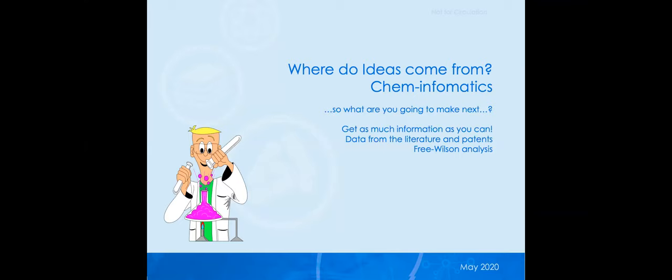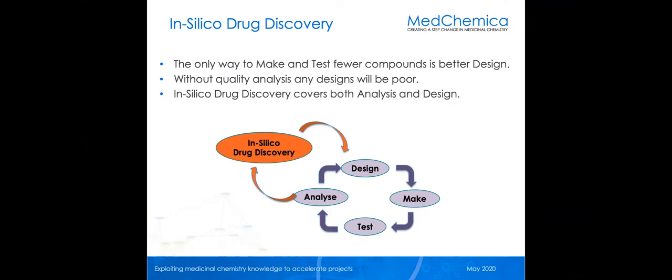Where do ideas come from? How do we think of the next thing to make? The point I want to make is about rigorous analysis. You're familiar with the design-make-test-analyse cycle. The point about in silico drug discovery is not just at the design stage, it's at the analyse stage. With multidimensional data these days, it's too much for us to take in. We want to leverage the power of a computer to help turn over data, see patterns, and really understand where we are to make much better design decisions going forward.